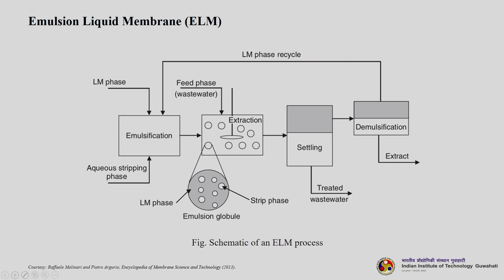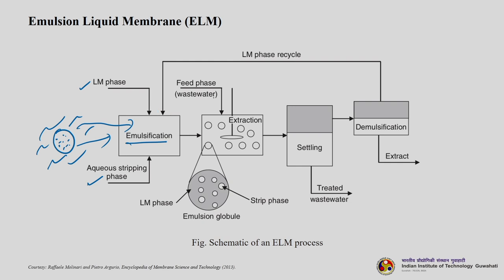In the ELM schematic setup, the first chamber is the emulsification stage where the aqueous stripping phase and liquid membrane phase are mixed together to form the emulsion structure. Then the feed phase is added to this discrete phase emulsion in the extraction process with very low agitation speed. During this, mass transfer takes place and the solutes we want to transport from the feed phase travel through the emulsion membrane phase and get trapped inside the receiving or stripping phase.